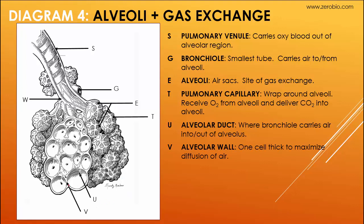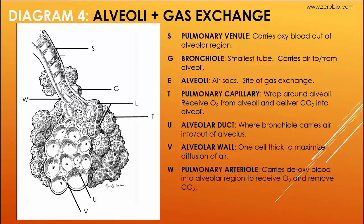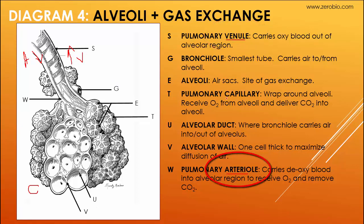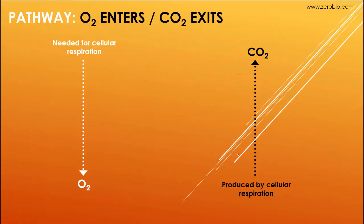The alveolar wall is very thin — generally one cell thick — to allow for efficient diffusion. W points to the pulmonary arteriole, which carries deoxygenated blood into the alveolar region and forms capillaries around the alveoli. The venule then carries blood that has received oxygen and given up CO2 back out. So we have a pulmonary arteriole in, pulmonary capillaries around the alveoli, and a pulmonary venule out.